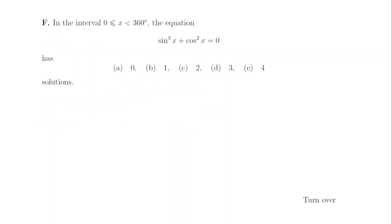1f. Write cos squared as 1 minus sin squared, and this becomes a cubic for sin x. We'd like to know how many roots this cubic has, so find its turning points — it turns out there's only one solution to the cubic. One value of sin x means two solutions for x, so the answer is c.